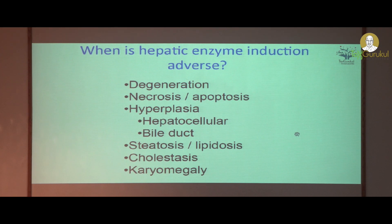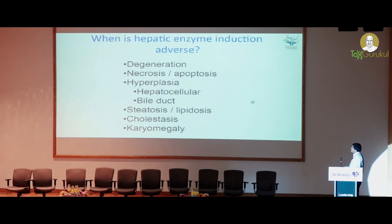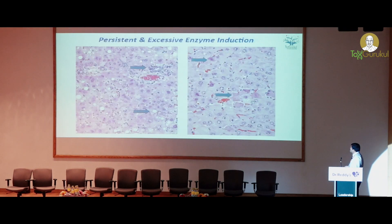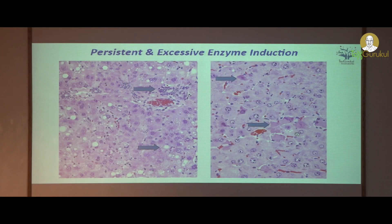Coming to when enzyme induction should be considered adverse: if you see only hepatocellular hypertrophy without any other changes — without any change in clinical chemistry parameters like increased ALT or AST — then you can conveniently call it a non-adverse adaptive change. However, if along with hypertrophy you see degeneration, necrosis, hyperplasia, bile duct hyperplasia, lipidosis, or cholestasis, it is definitely adverse. This example slide shows bile duct proliferation and hepatocellular degeneration with single cell necrosis or apoptosis resulting from excessive enzyme induction — these are definitely adverse changes.